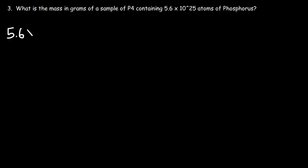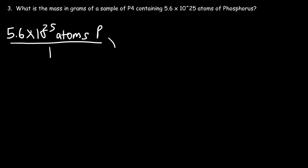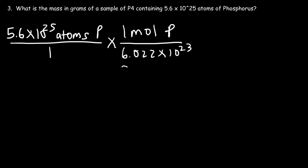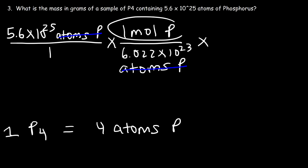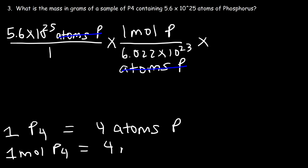Just like before, we start with 5.6 times 10 to the 25 atoms of phosphorus. We use Avogadro's number: one mole of phosphorus is 6.022 times 10 to the 23 atoms of phosphorus. Now that we have moles of phosphorus, we can convert to moles of P4. P4 is a molecule — one molecule of P4 contains 4 atoms of phosphorus. So one mole of P4 is equivalent to 4 moles of P. We want the units to match, and P is an atom while P4 is a molecule.